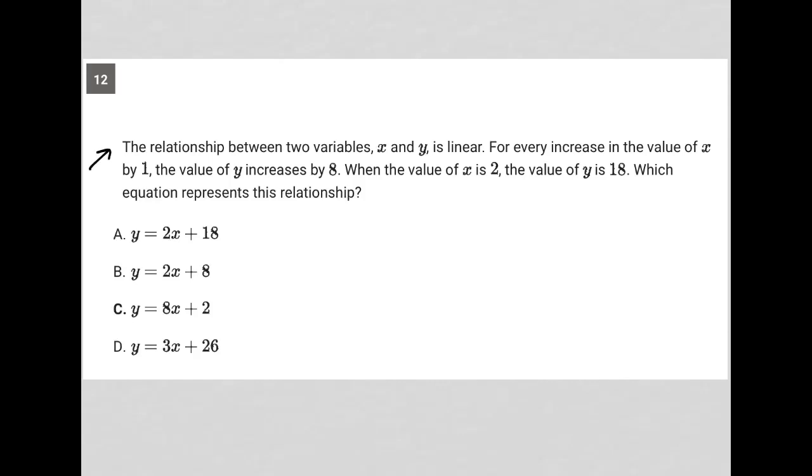This question says the relationship between two variables, x and y, is linear. First of all, the fact that we know it's linear means we're going to have an equation in the form y equals mx plus b, the slope-intercept form for the equation of a line.